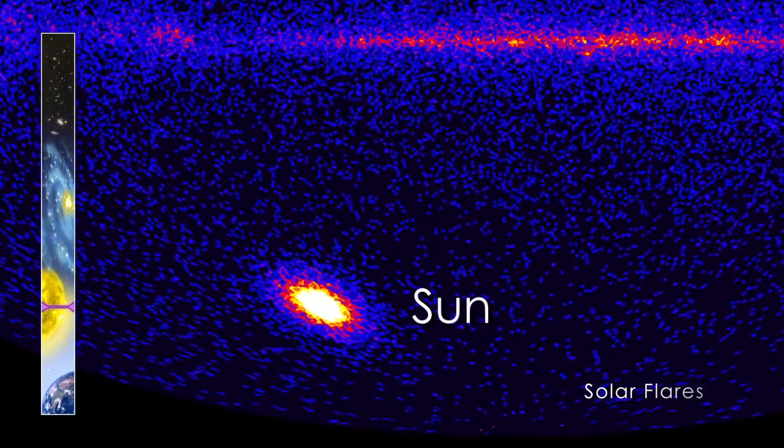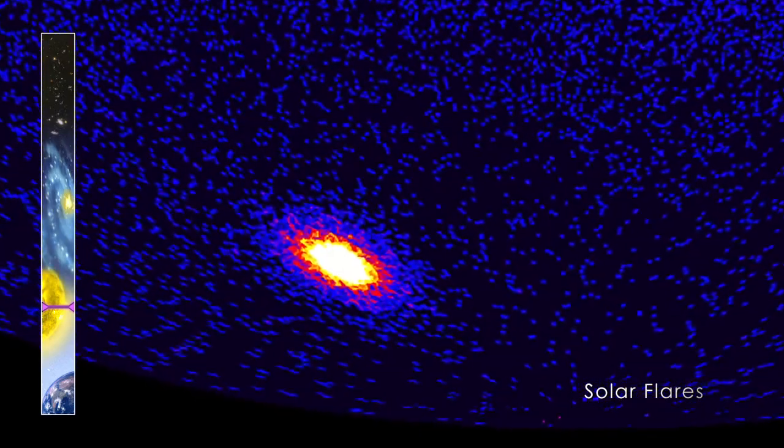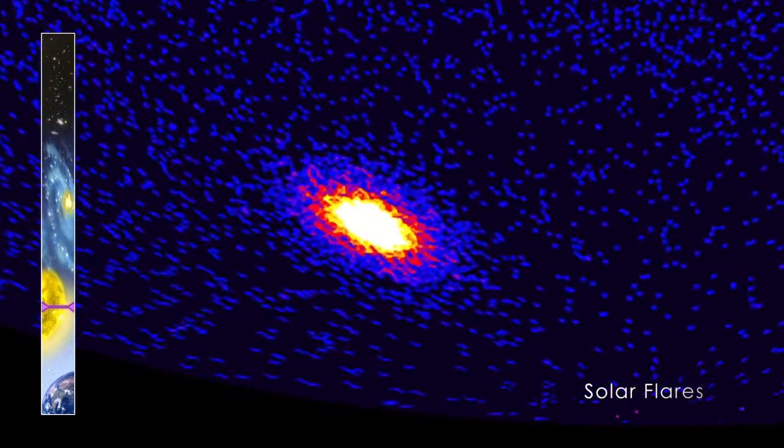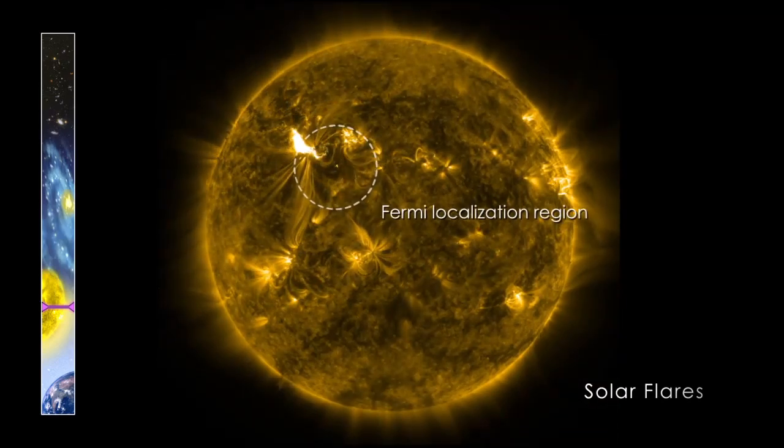In early March 2012, a powerful flare erupted on the Sun. During this event, the LAT detected the highest energy light ever recorded from a solar flare.